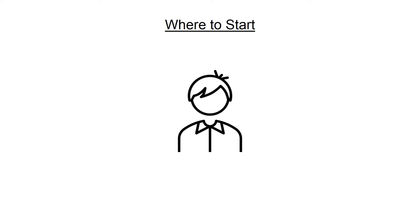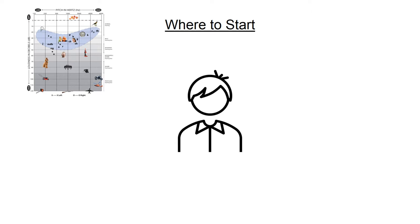Every deaf child is different, and what might help one child may not be appropriate for another. What strategies are needed depends on many factors, and it helps to know as much as possible about the child you are working with. If you have seen the module on understanding deafness, you will know that there are different degrees and types of hearing loss. What does your student's hearing loss look like? This is something the child's teacher of the deaf can help you understand, but it also doesn't give you the full picture.